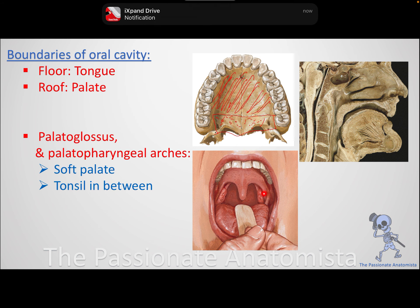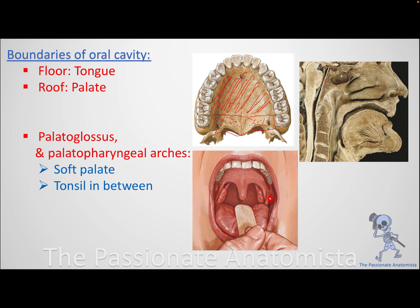Laterally, you have two important arches. The anterior one runs from the soft palate to the tongue — that is the palatoglossal arch. The posterior one runs from the soft palate to the pharynx — that is the palatopharyngeal arch. In between them lies the palatine tonsil. These are the important boundaries making up your oral cavity proper.